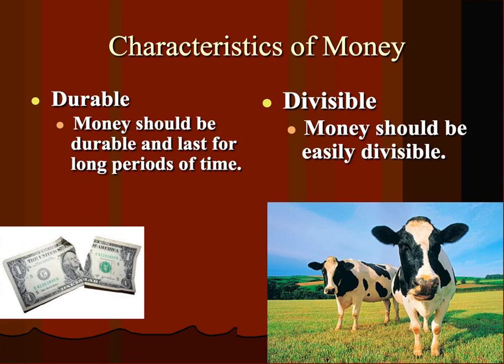Durable: money should be durable and last for long periods of time. A dollar bill — you rip it, okay, it's damaged — but it's going to last a really long time: 100 years, 200 years, it's still going to be here. A cow might last a while, but after 100 years that cow is not going to be worth as much as it is right now.